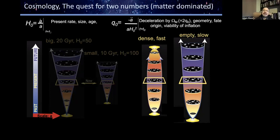The second derivative is called the deceleration parameter. It is determined by the amount of matter in the universe, the mass density, which tells us how much deceleration there will be. In a matter-dominated universe, knowing the total matter also tells us the geometry of space and the ultimate fate of the universe — whether it was dense and would end in a big crunch, or lightly filled and would expand forever.